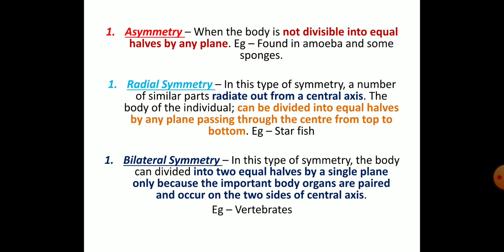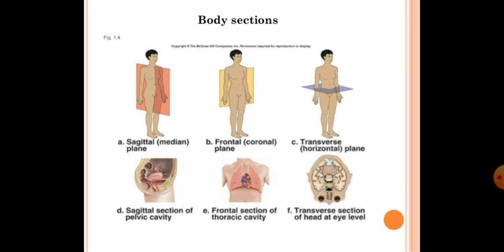To summarize: asymmetry means the body is not divisible into equal halves — example, amoeba. Radial symmetry means similar parts radiate out from a central axis and can be divided into two equal halves at any plane from top to bottom — example, starfish or sea anemone. Bilateral symmetry means the body can be divided into two equal halves by a single plane only, because important body organs are paired and occur on two sides — example, vertebrates.